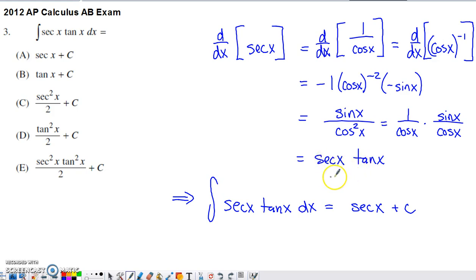So we've just kind of verified by guessing and checking that since the derivative of secant of x is secant of x tangent of x, the antiderivative of secant of x tangent of x, taken with respect to x, is going to take us back to secant of x, which is why our answer here is option A.